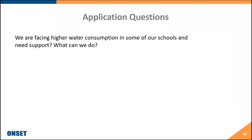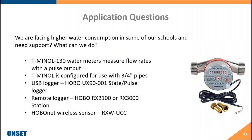For water consumption monitoring, especially common in the West and Midwest, we sell a T-Minol flow meter that records GPM of water usage. These connect to either a standalone USB pulse data logger or a pulse input adapter sensor for a remote monitoring station. They are configured for three-quarter inch pipes, with step-up and step-down adapters available to go up to a one-inch pipe or down to a half-inch pipe. They are compatible with both our USB data loggers and our remote monitoring stations.